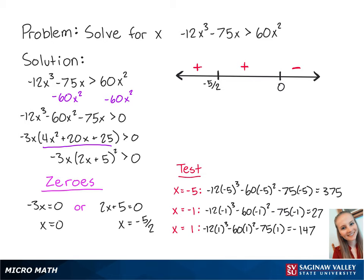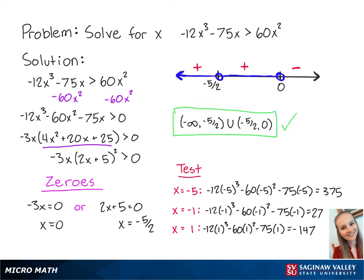To make the inequality a true statement, the left side must be greater than 0. This means that x must be less than 0 with negative 5 halves excluded. So x ranges from negative infinity to negative 5 halves exclusive, or negative 5 halves to 0 exclusive. And this is the final answer.